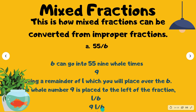So you're multiplying the denominator by the whole number, then adding the product to the numerator to get back your improper fraction.